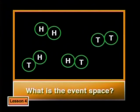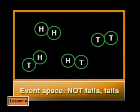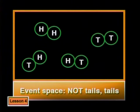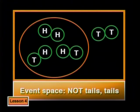What is the event space — the set of favorable outcomes for these coins? We don't want to get two tails. So the event we want is not tails-tails. There are three ways of not getting two tails. So let's put them all together in one circle — that is the set of favorable outcomes, the event space.